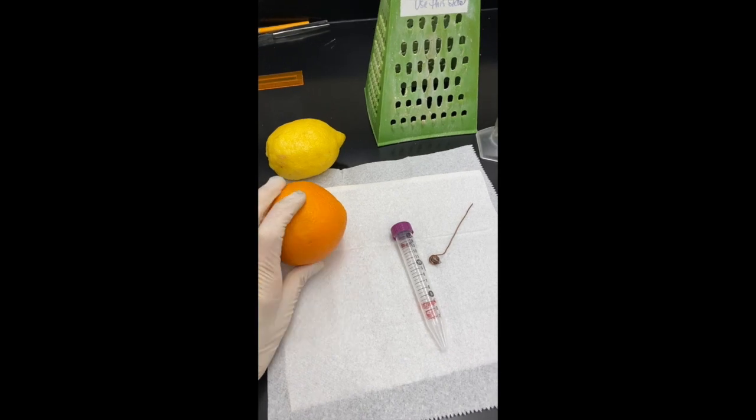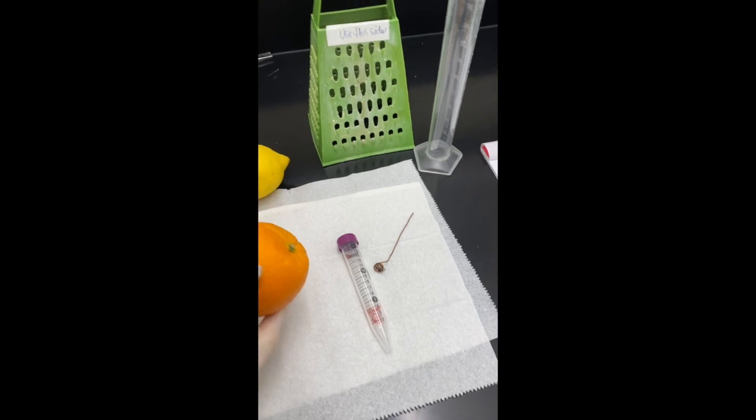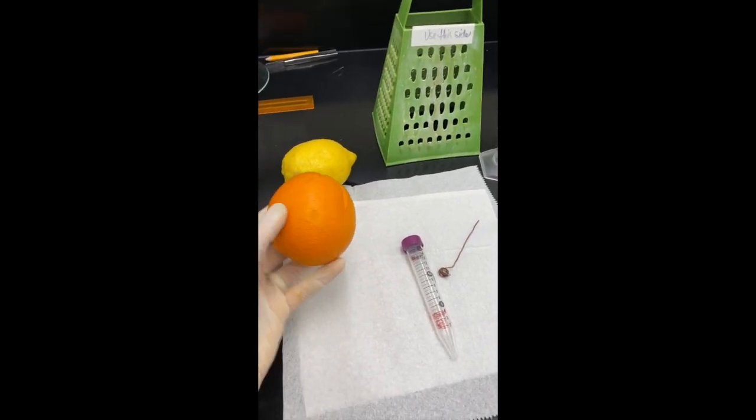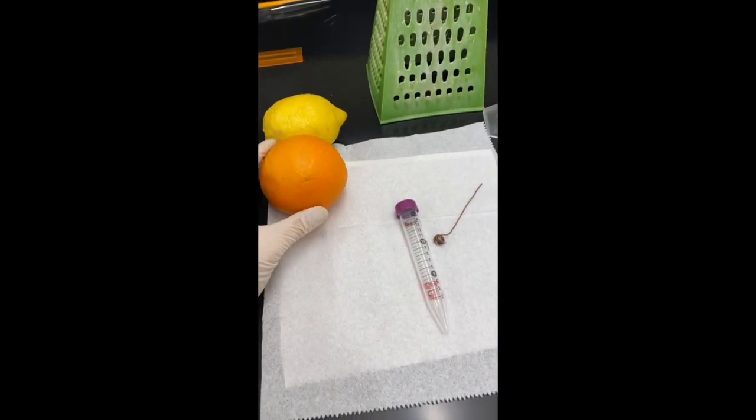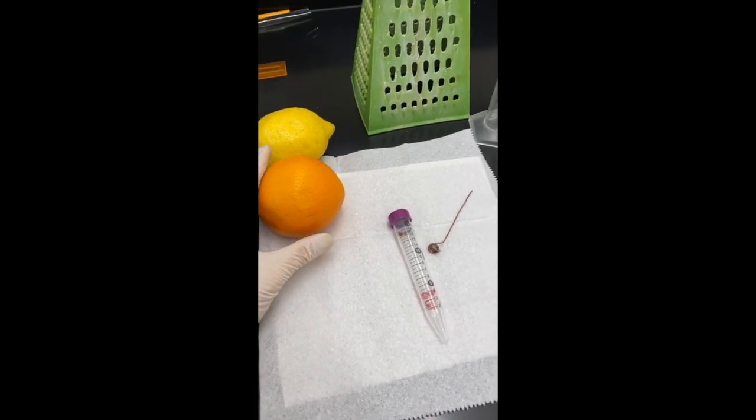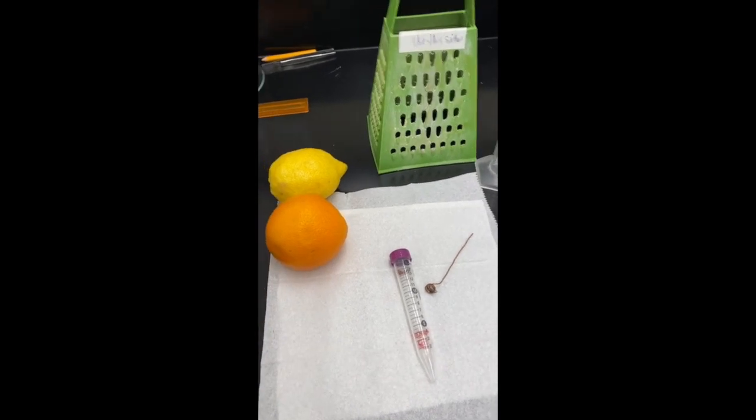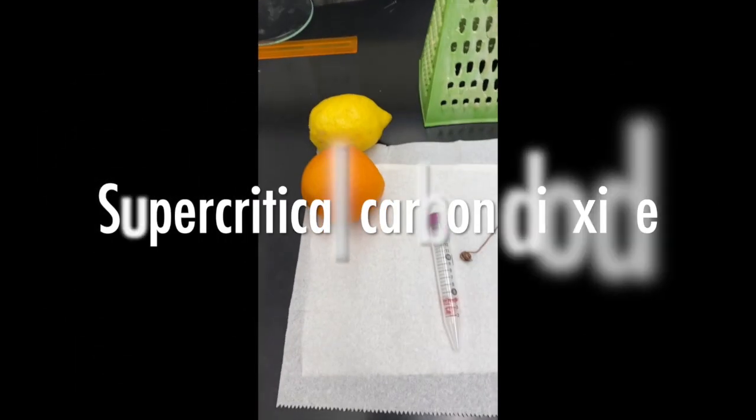Typically to do extractions we have our solid, which is going to be from the orange rind, and you can use a liquid, any kind of solvent really. But to do a green extraction we're going to use a greener solvent. In this case we're going to use supercritical CO2 or supercritical carbon dioxide.